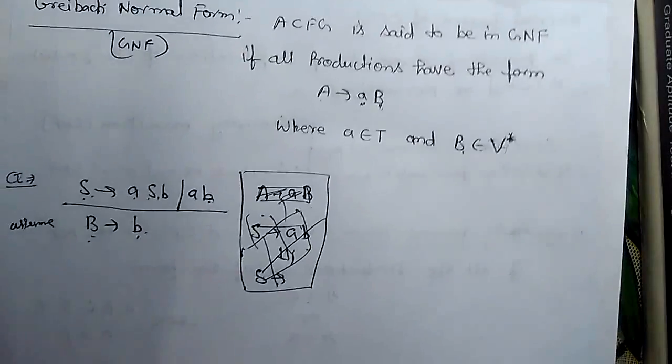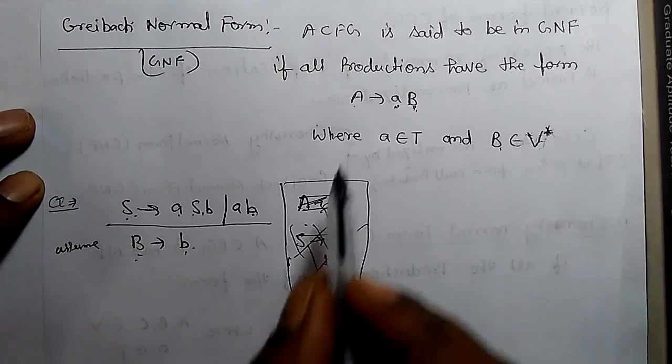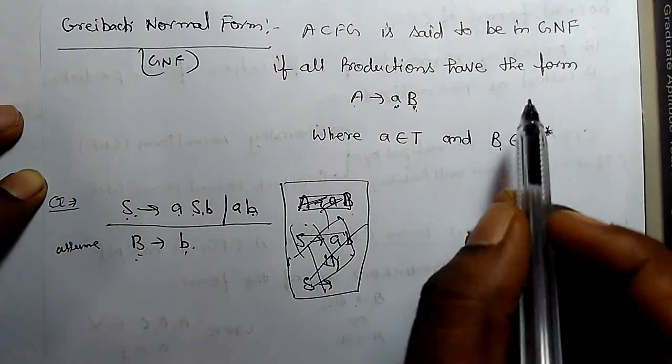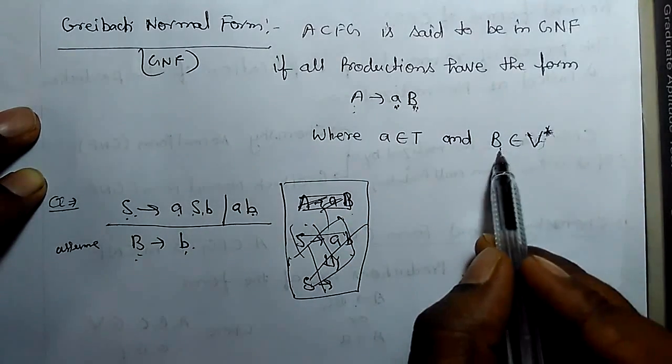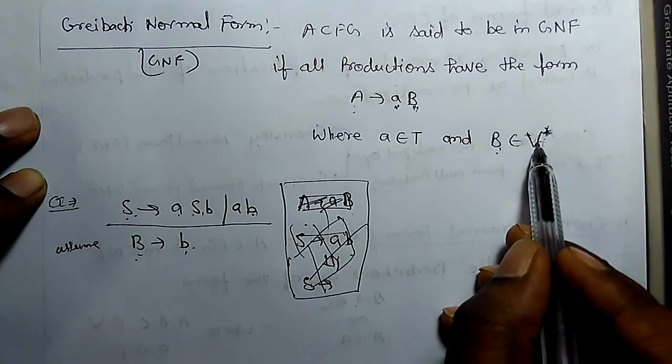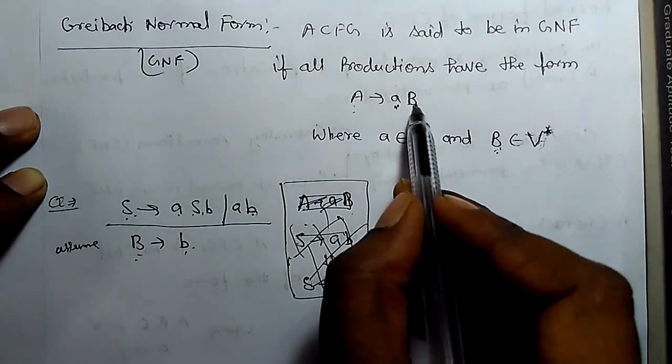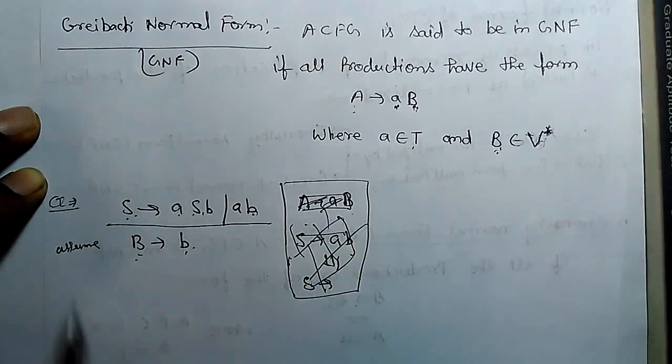Next is GNF. A CFG is said to be in GNF if all the productions have the form A derives a capital B, where B belongs to V star (variables closure). It should be part of variable closure. So here B can be more than one length also, but a belongs to terminal.